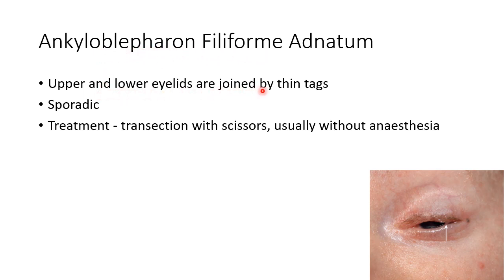Now let us discuss about ankyloblepharon filiform adnatum. In this condition, the upper and lower lids are joined by skin tags, as you can see in this picture. They are usually sporadic and the treatment is with transection using scissors, usually without anesthesia. Thank you.